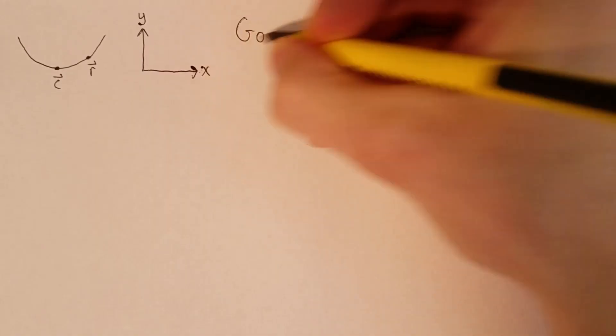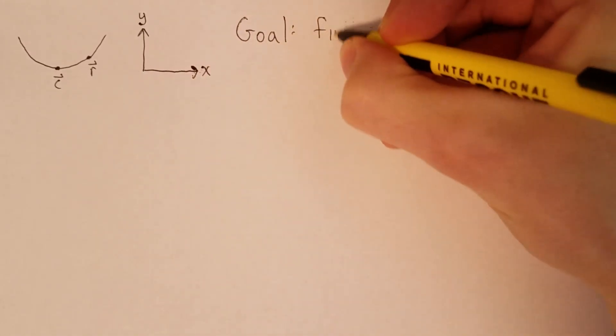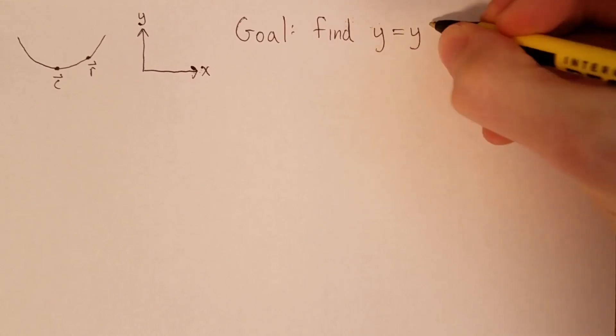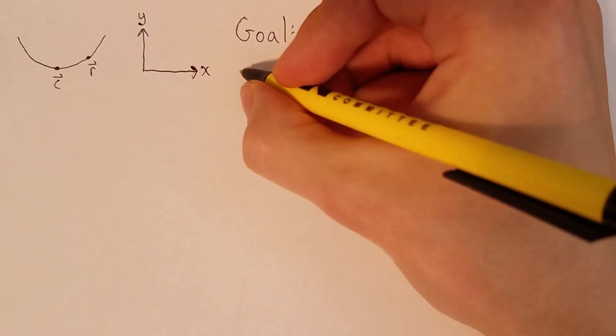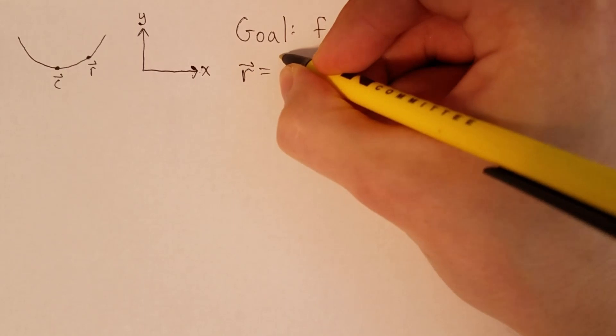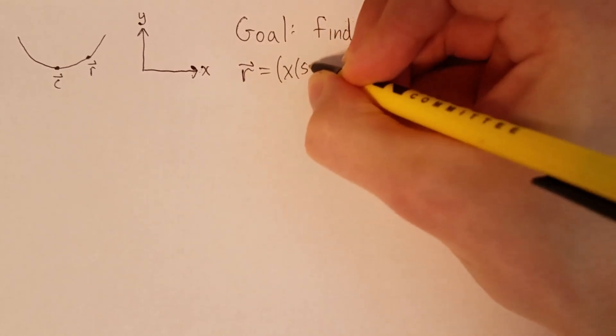And our goal is to write r as actually y, a function of x. But for now, we are going to parameterize it by a parameter s, so we'll write r is equal to x of s, y of s.